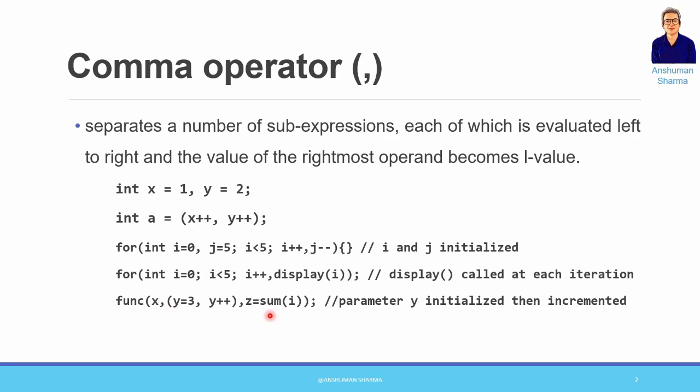In a function call, the comma separates parameters: first x is passed, the second parameter is y, and the third one is z.